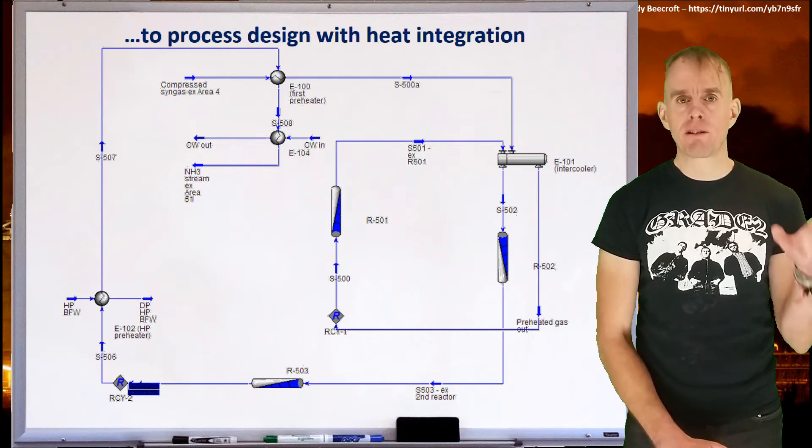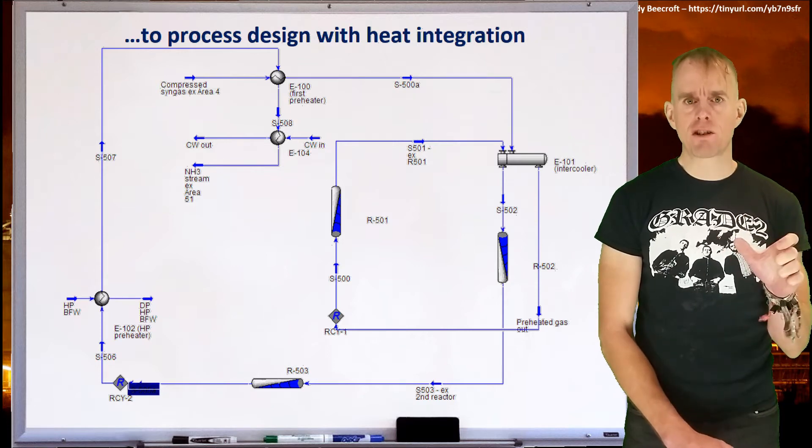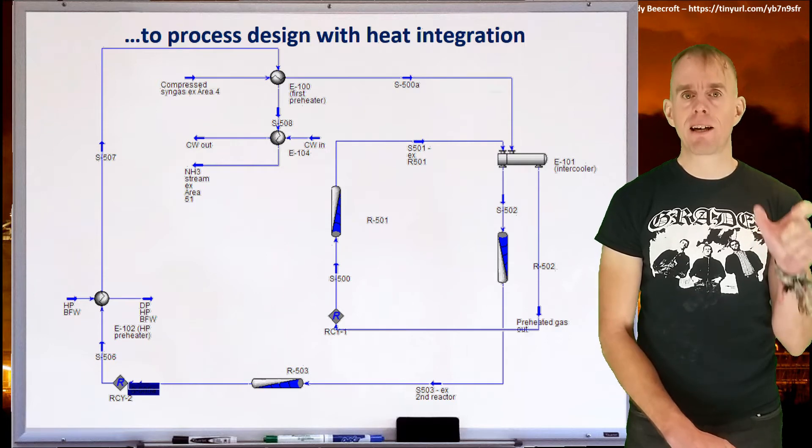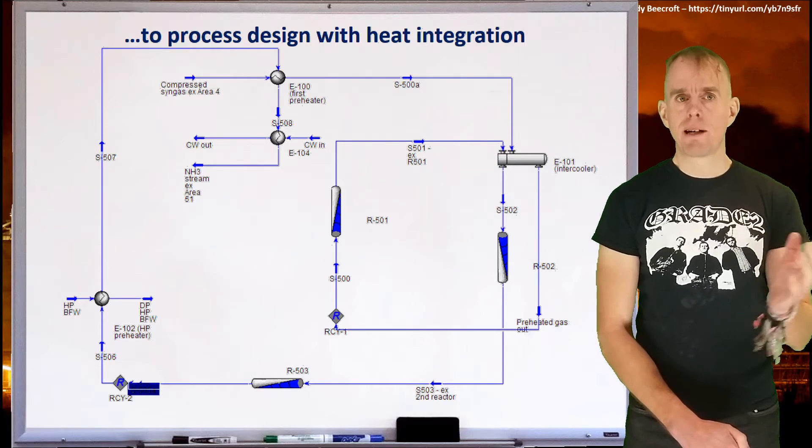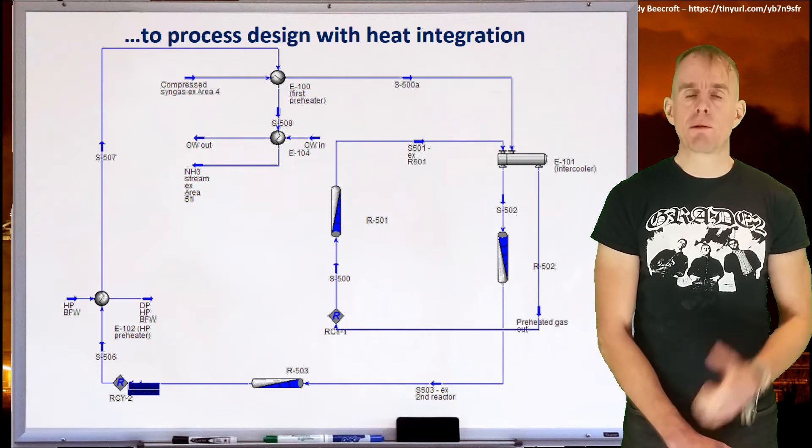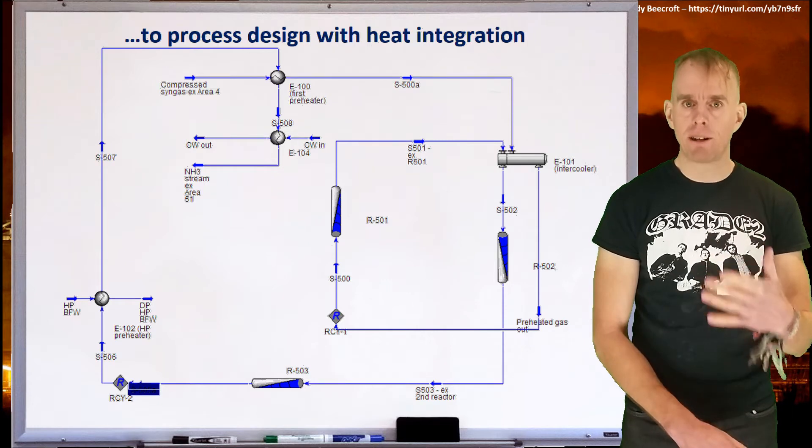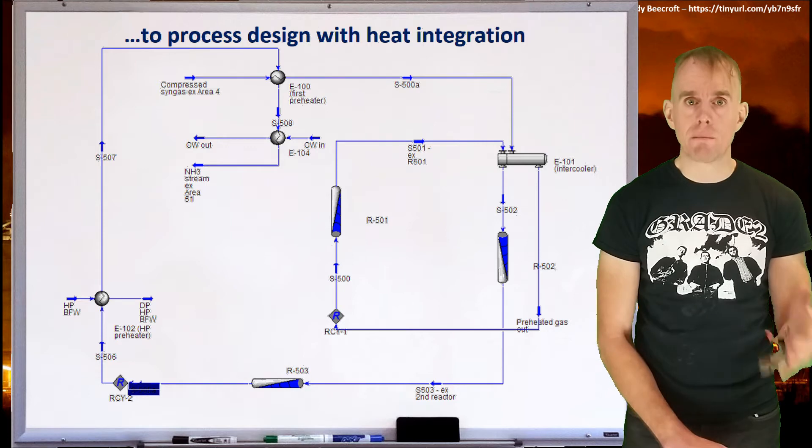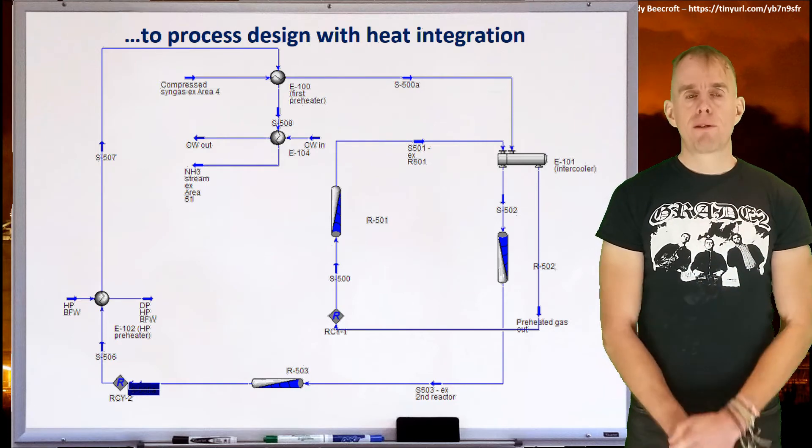Let's again walk the process route. Starting top left, we've got our compressed nitrogen and hydrogen going through a heat exchanger. That heat exchanger takes some stream, that we'll look at in a minute, as the hot utility. It heats the reaction mixture up, and there's a second heat exchanger, which again starts to heat that reaction mixture up to reactor temperature. And again, if we look at that heat exchanger, we can see that there is another hot stream being used as a utility.